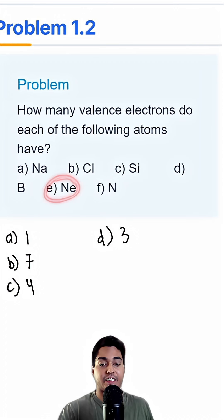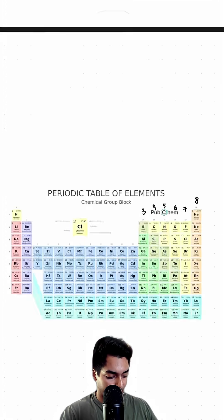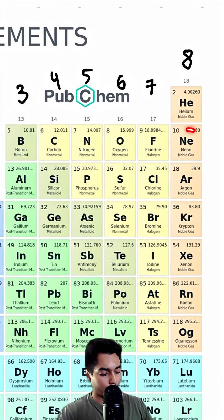Next, let's check neon, which is a noble gas. As we can see, neon lives right here, which indeed does have eight valence electrons.